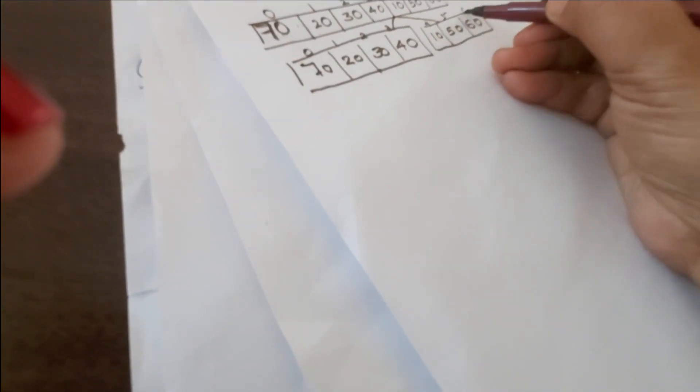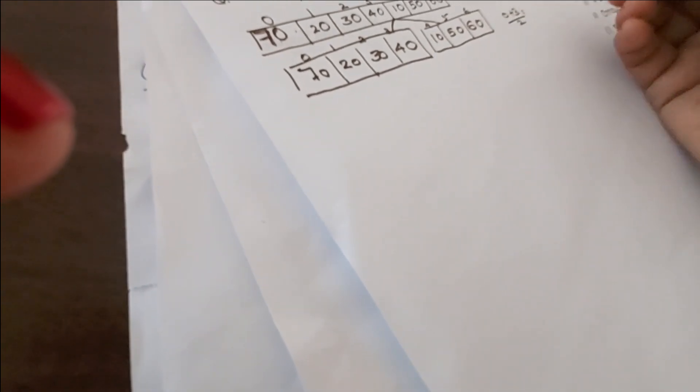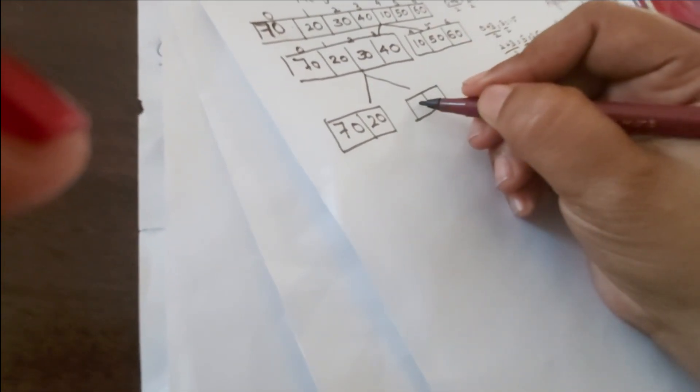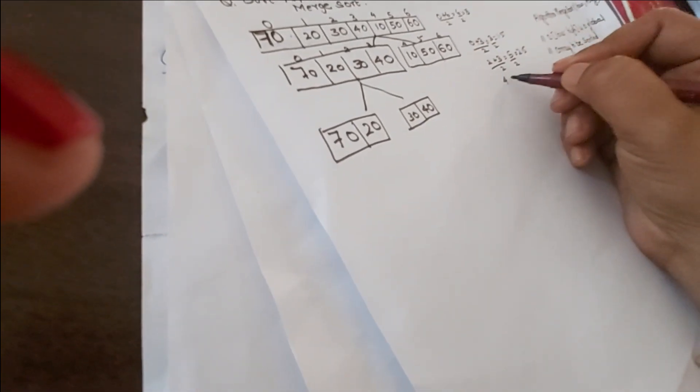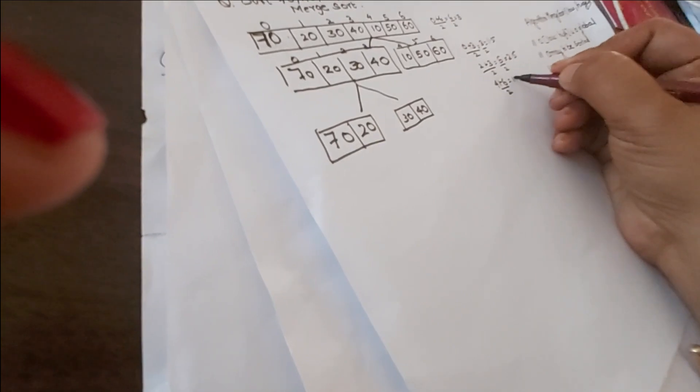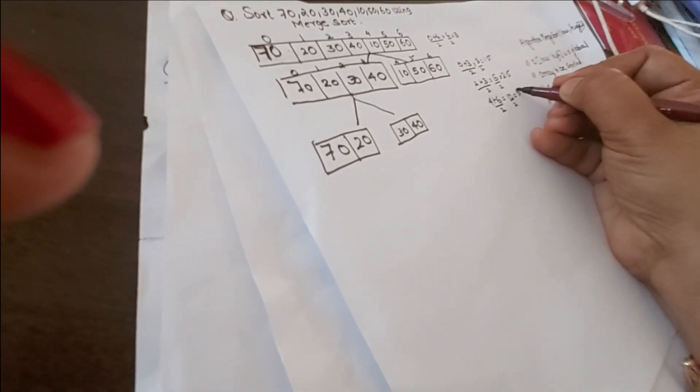S1 spans indices 0–3. Its mid = (0 + 3) / 2 = 1.5, so we split from index 1, giving [70, 20] and [30, 40]. For S2, spanning indices 4–6, mid = (4 + 6) / 2 = 5, so we split into [10, 50] and [60].